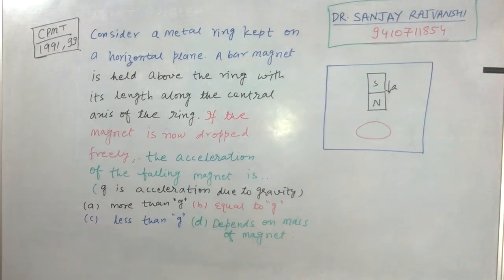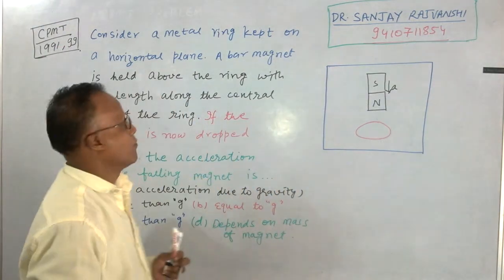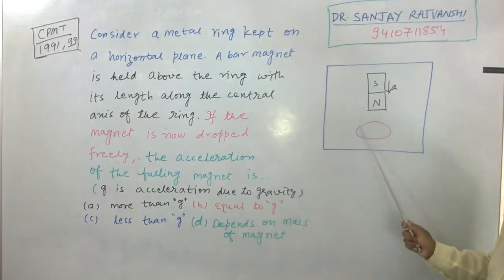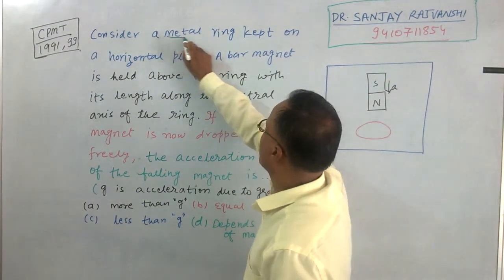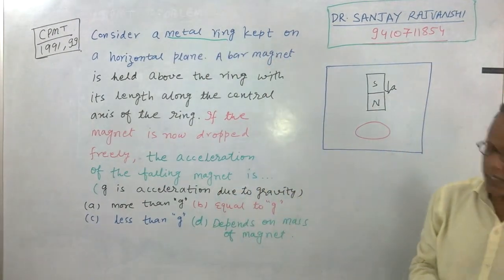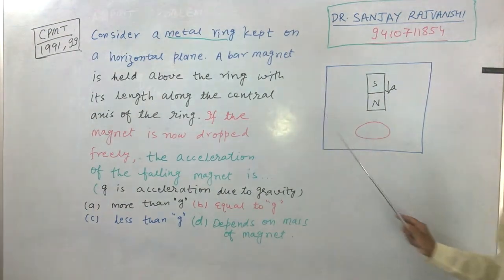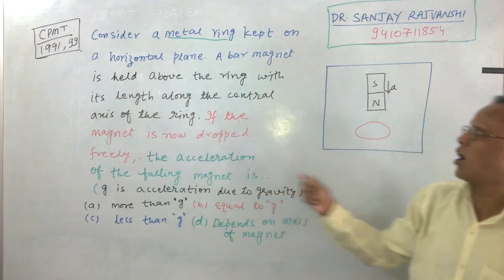Hello everyone. Our next problem is CPMT 1991-99. Consider a metallic ring — remember, it is given as a metallic ring, meaning it is conducting — kept on a horizontal plane, and a bar magnet is held above the ring.